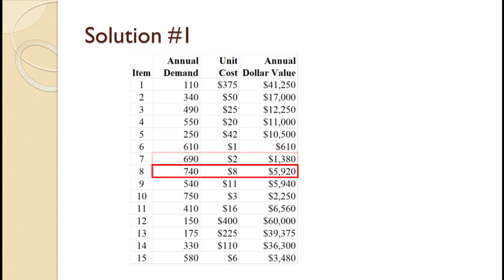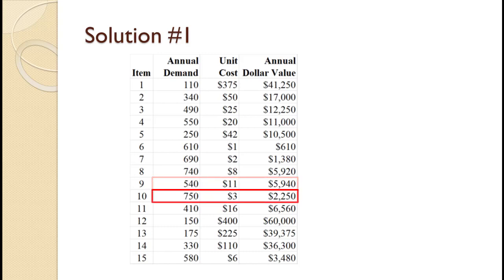For item number eight, annual demand of 740 times unit cost of $8 equals $5,920. For item number nine, annual demand of 540 times unit cost of $11 equals $5,940. For item number ten, annual demand of 750 times unit cost of $3 equals $2,250.